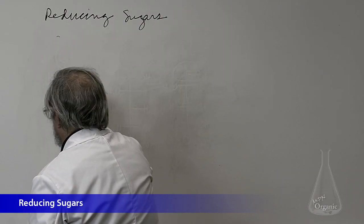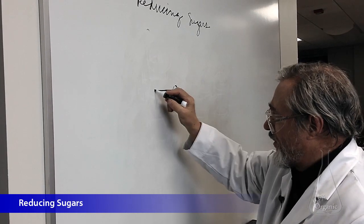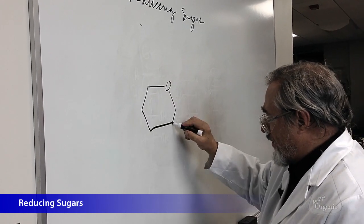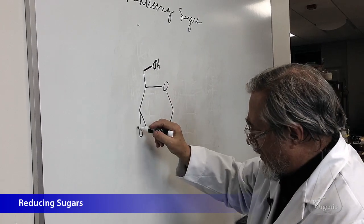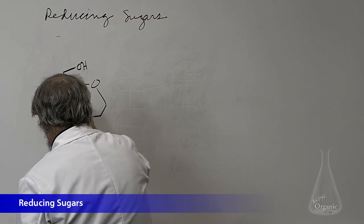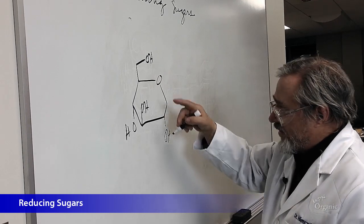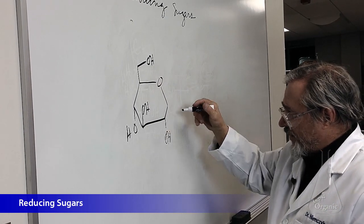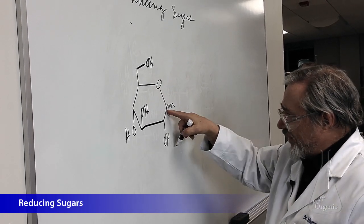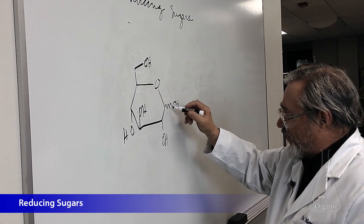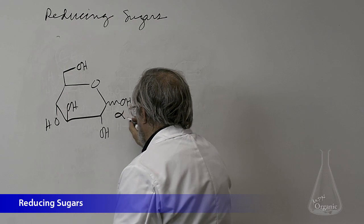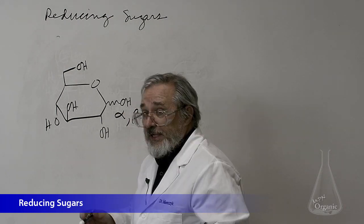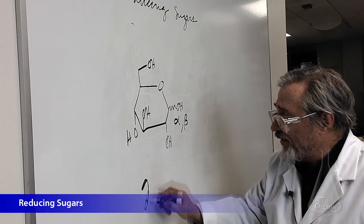Now I'm going to use the traditional Haworth projection of the rings here. Glucose is easy. Glucose is up, down, up, down, and here's where the aldehyde was, and I'm just going to draw a little wavy line there with the OH to indicate that this could be either alpha or beta linkage. So this is glucopyranose.